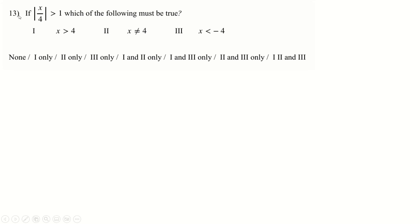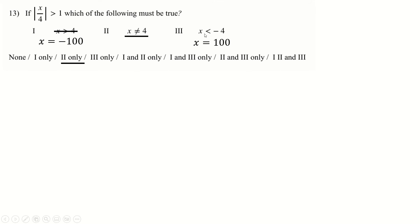Question 13: with the modulus condition given, if we put in x = −1,000,000 the modulus term is large and bigger than 1, so x doesn't have to be bigger than 4. Does x have to not equal 4? Putting in x = 4 gives |mod| = 1 which is not bigger than 1, so x = 4 doesn't satisfy the rule — so statement 2 'x ≠ 4' is true. Putting in a large positive number shows statement 3 need not be true. Answer: 2 only.